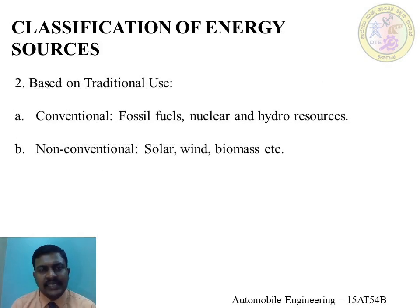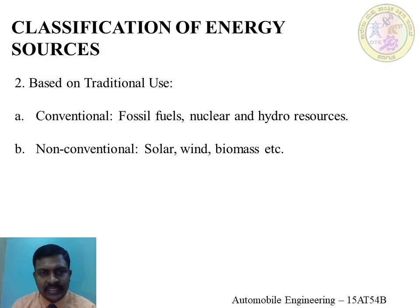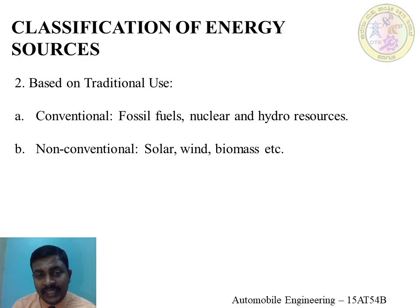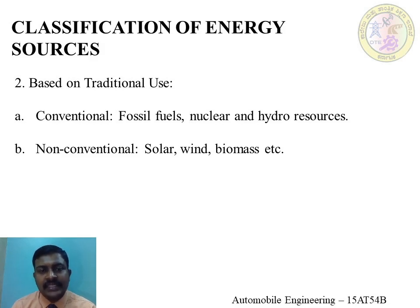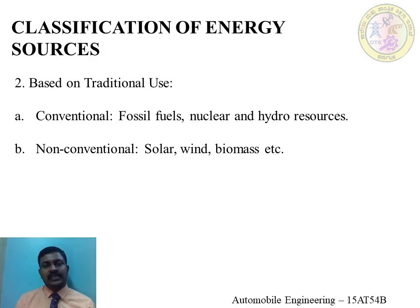The second classification is based on traditional use, where we have conventional and non-conventional energy sources. Conventional energy sources are those which have been used for many decades, even at the time of the oil crisis of 1973. Resources such as fossil fuels, nuclear, and hydro resources all fall under conventional energy resources.